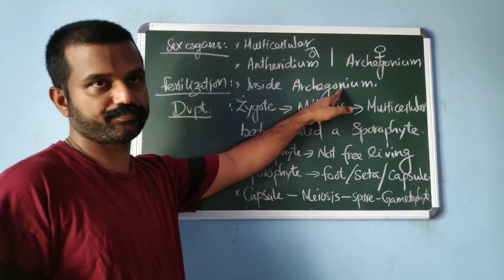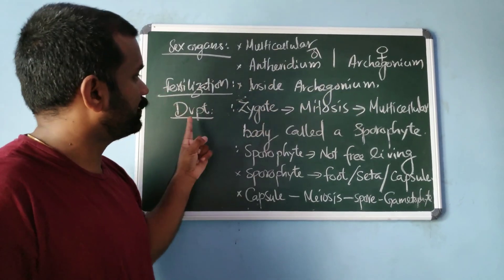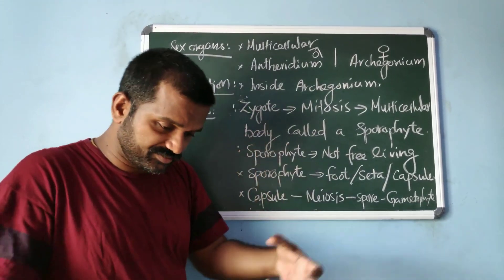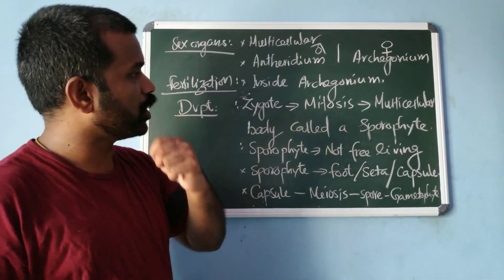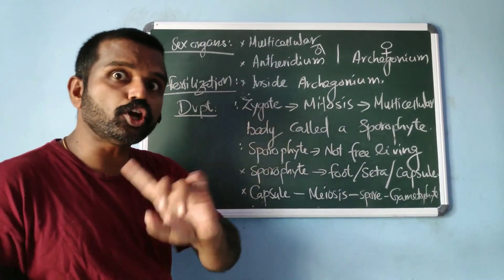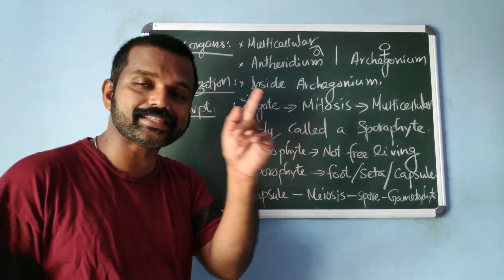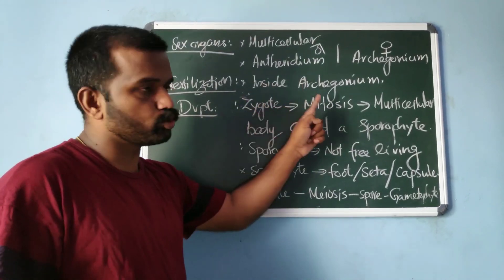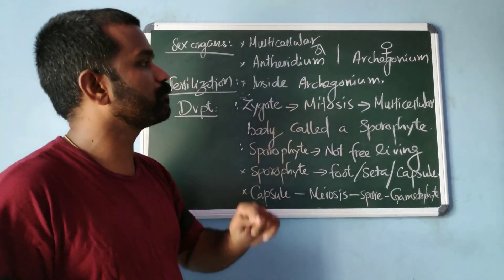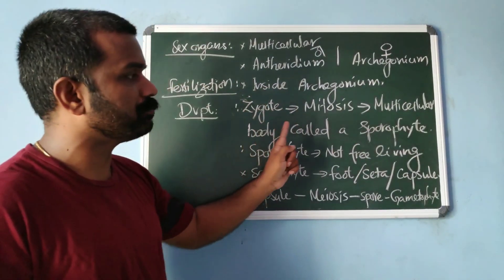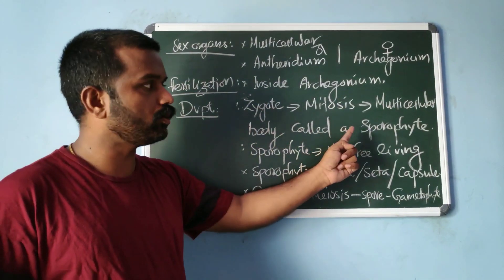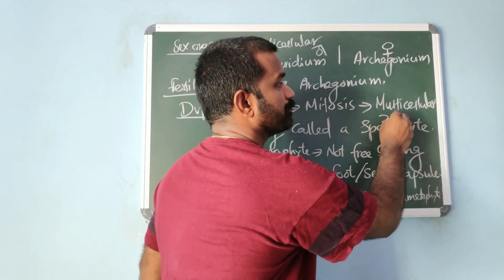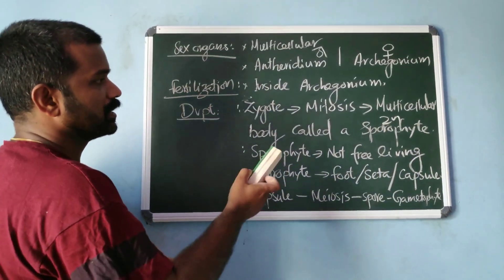After fertilization, the diploid zygote does not undergo meiosis. Unlike in algae where the zygote undergoes meiosis, here the zygote undergoes mitosis and produces a multicellular plant body called the sporophyte, which is diploid.